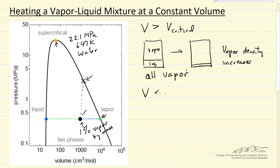Another possibility, of course, is the volume is less than the critical volume. So we're sitting somewhere down here, which means the container is going to look something like this, where this is liquid, and then vapor is here.